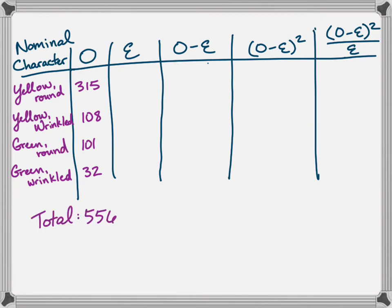All right, so we get our total. We multiply now by 9 over 16, 3 over 16, and 1 over 16. So you will see that, since it's a 9 to 3 to 3 to 1 ratio, you do see 104.25 twice. You should see that.